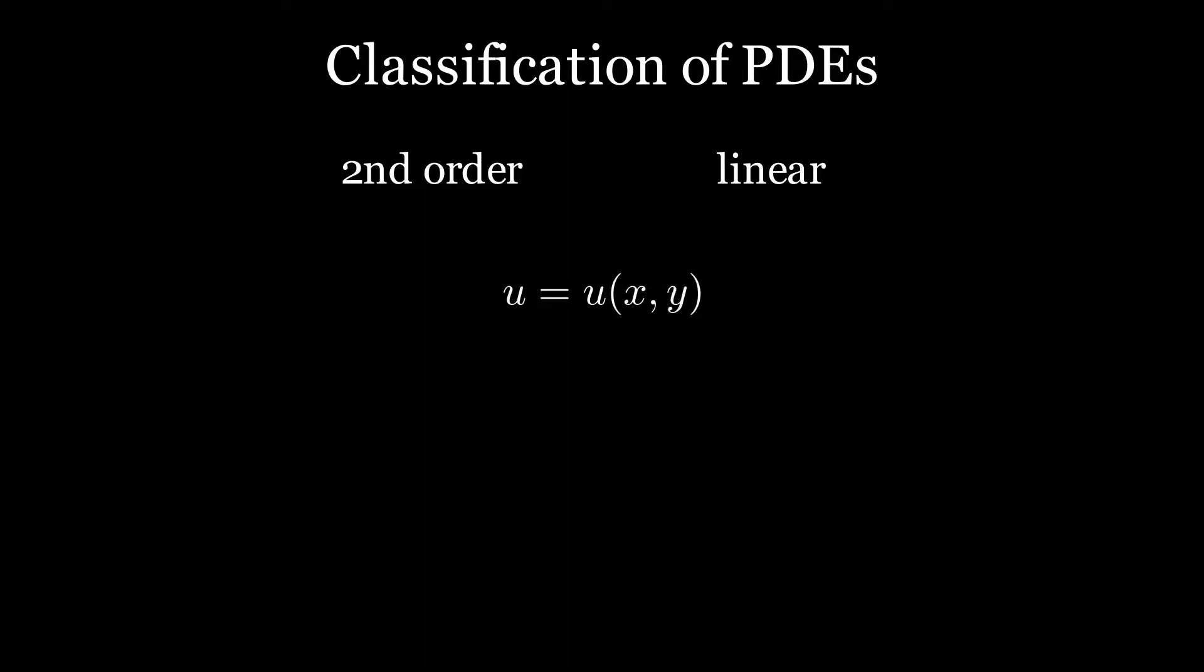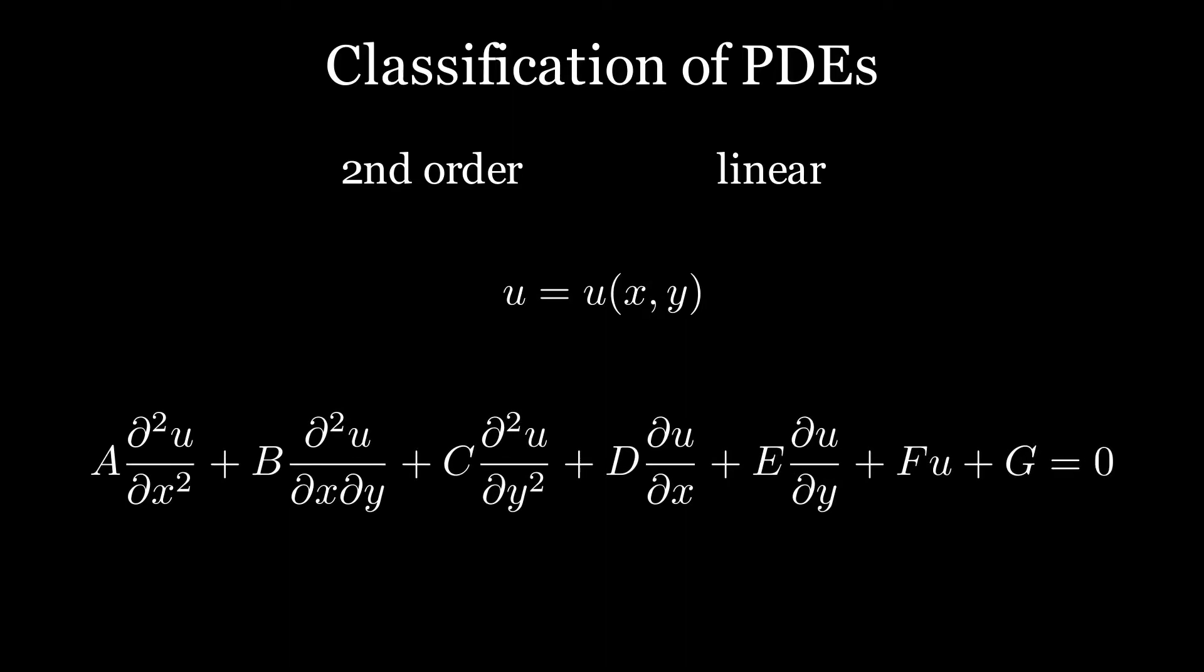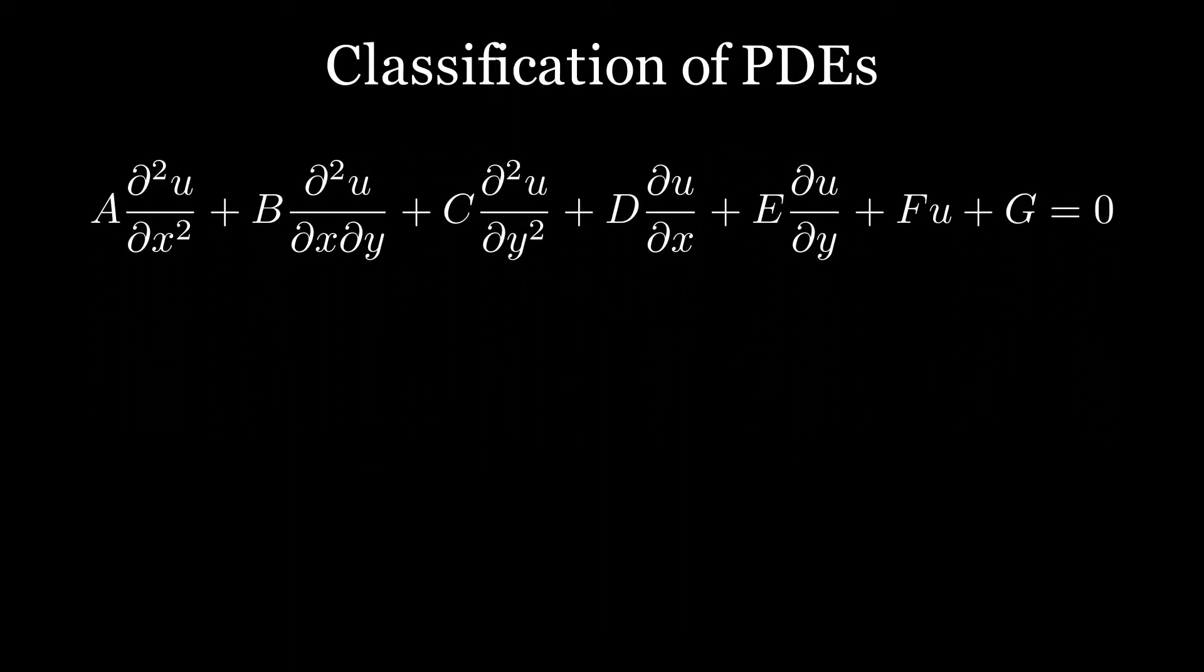If U is a function of two independent variables X and Y, the most general form of a linear second-order partial differential equation can be written like this. Classification is done depending on the coefficients A, B, and C.